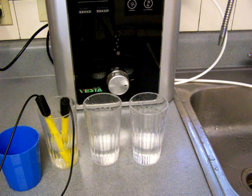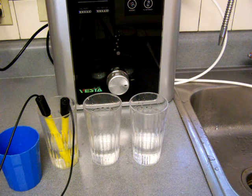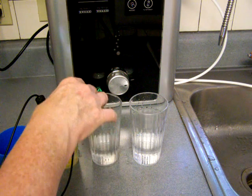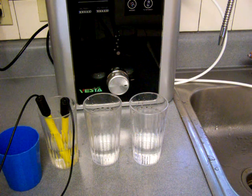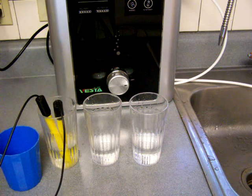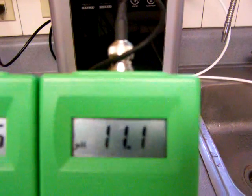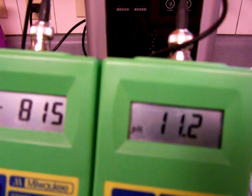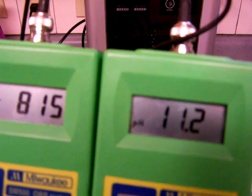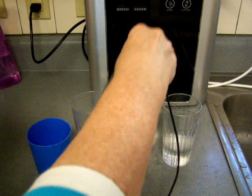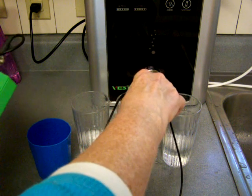For the slow flow rate, it's like an 11.2 pH with a negative 815 ORP. And the faster flow rate...